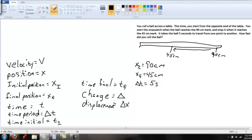Before we can solve for the velocity using this equation, delta X over delta T, we first have to find delta X. Delta X is a change in position. It is the final position minus the initial position.